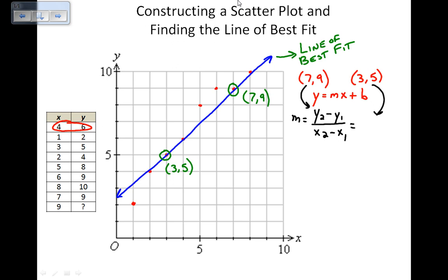So, for example, we would have 5 minus 9 over 3 minus 7. 5 minus 9 is negative 4. 3 minus 7 is negative 4 as well. That's quite convenient. Negative 4 divided by negative 4 is going to be 1. So my slope of my trend line is going to be 1.